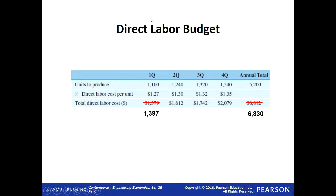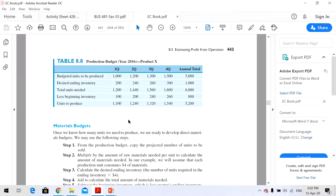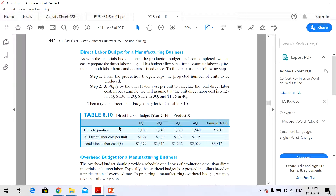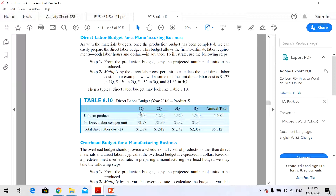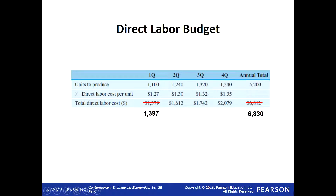Next, what is the cost of direct labor? Take the number of units to produce. The direct labor cost for one unit is $1.27. For each quarter, multiply units by $1.27. There is a typo mistake in the book: if you multiply 1,100 by $1.27, the answer is $1,397, not $1,379. So by this method we have our direct labor budget.